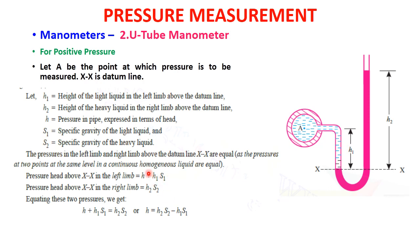Here h is the unknown pressure to be measured at point A, plus h1·s1 which is the fluid whose pressure is to be measured. In the right limb, the pressure head above XX is only h2·s2, because there is no other fluid besides the manometric fluid. Equating the two pressures: h + h1·s1 = h2·s2, which gives h = h2·s2 − h1·s1.